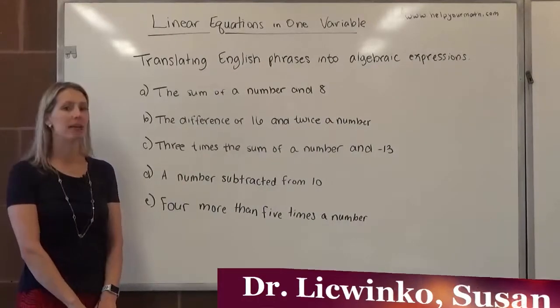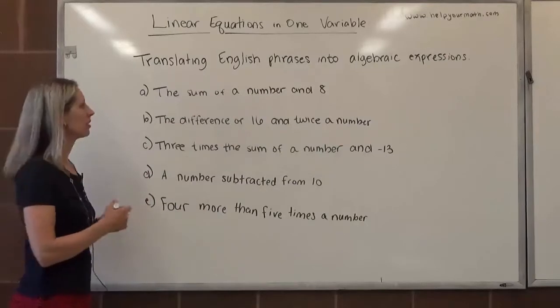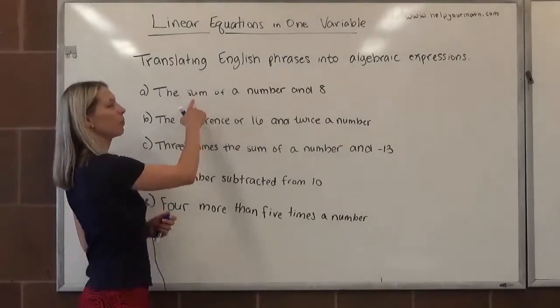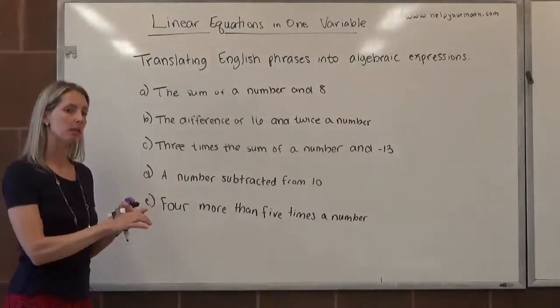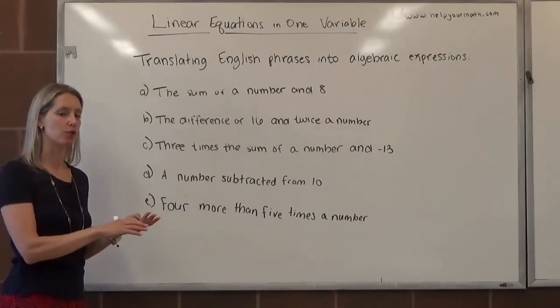First, we have the sum of a number and eight. The sum implies addition. When we see a word, there's four key words: sum is addition, difference is subtraction, product is multiplication, and quotient is division.